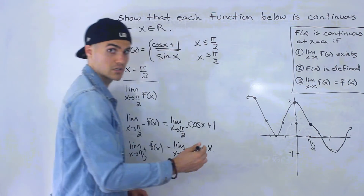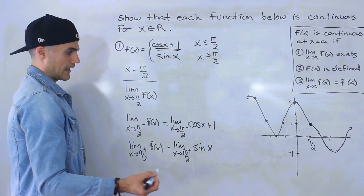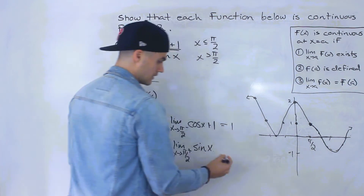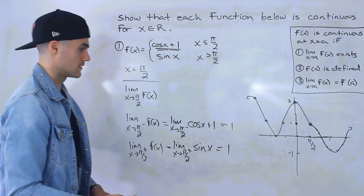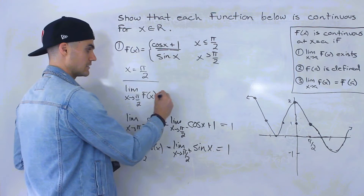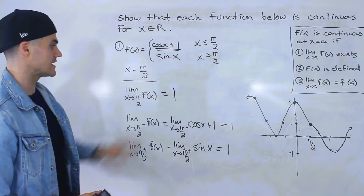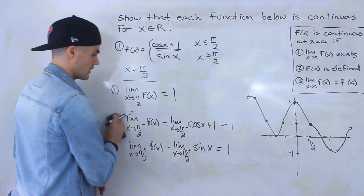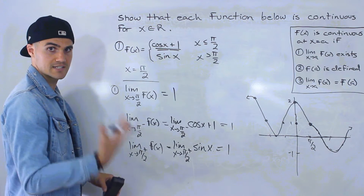Notice from the left side we're approaching the y value of one, and from the right side we're also approaching the y value of one. Since we're approaching that same y value from both sides, the limit equals one. So we've shown the limit exists and it equals one — that's the first condition, done using two one-sided limits.